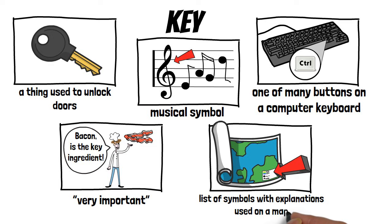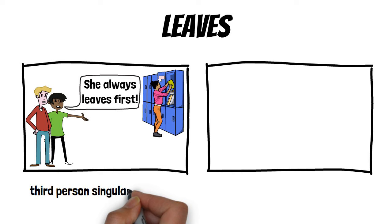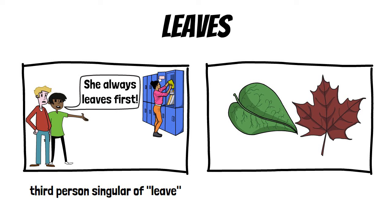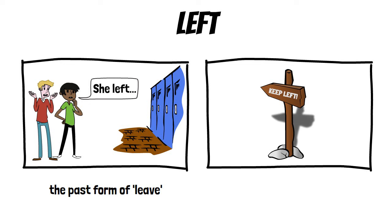Leaves: the first meaning is the third person singular of leave, and the second meaning refers to parts of a plant or a tree. Left: the first meaning is the past form of leave, and the second is a position that is the opposite of right.